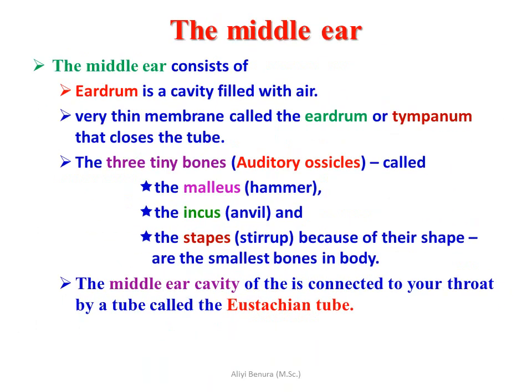The middle ear is a cavity filled with air. A very thin membrane called the eardrum, or tympanic membrane, closes the tube. Three tiny bones — the auditory ossicles — are in the middle ear: the malleus (hammer), the incus (anvil), and the stapes (stirrup). Because of their shape, they are the smallest bones in the body.